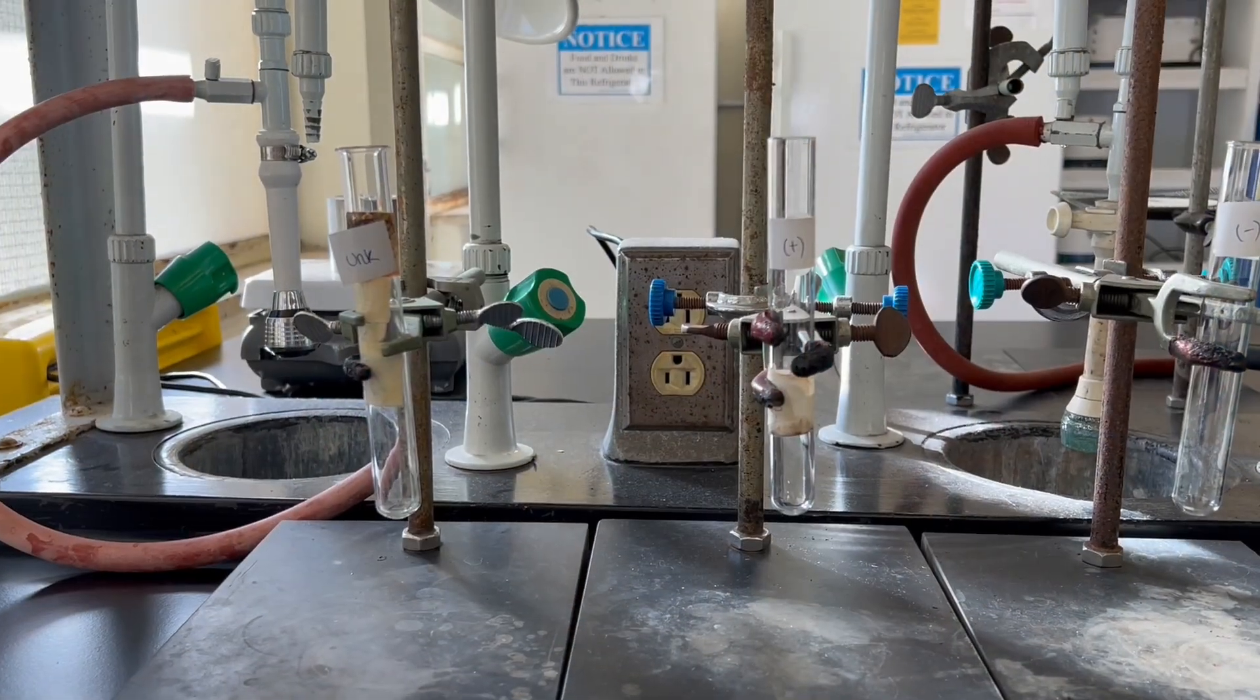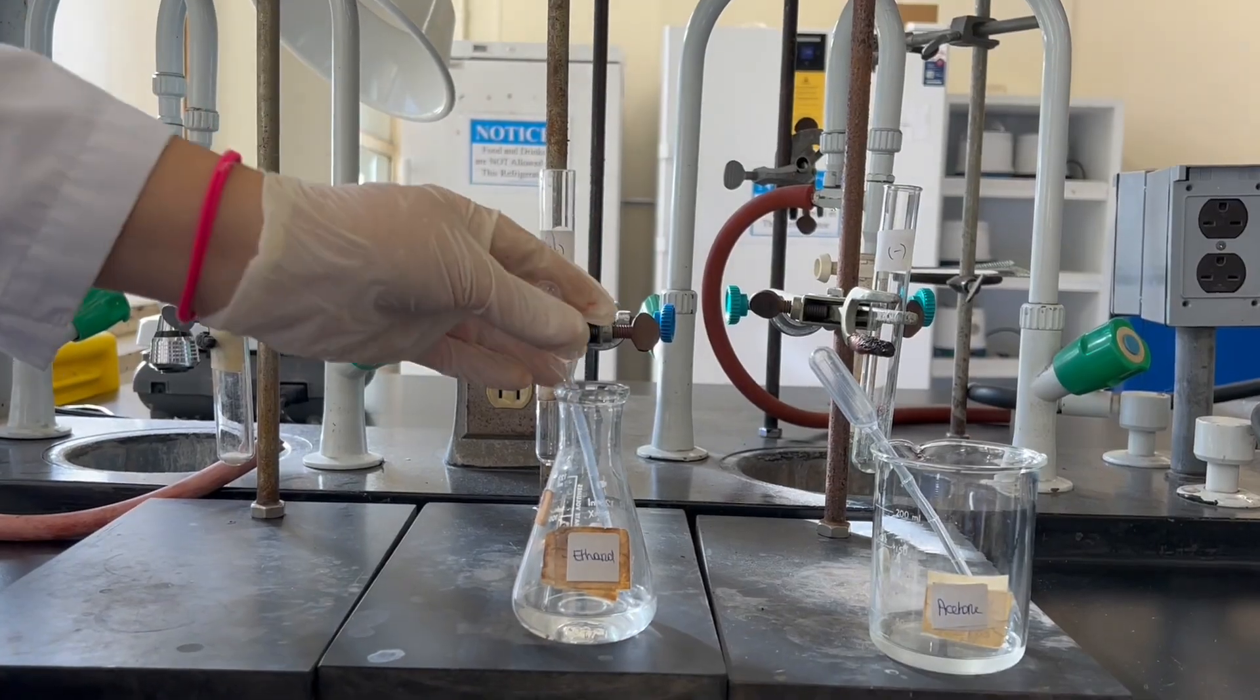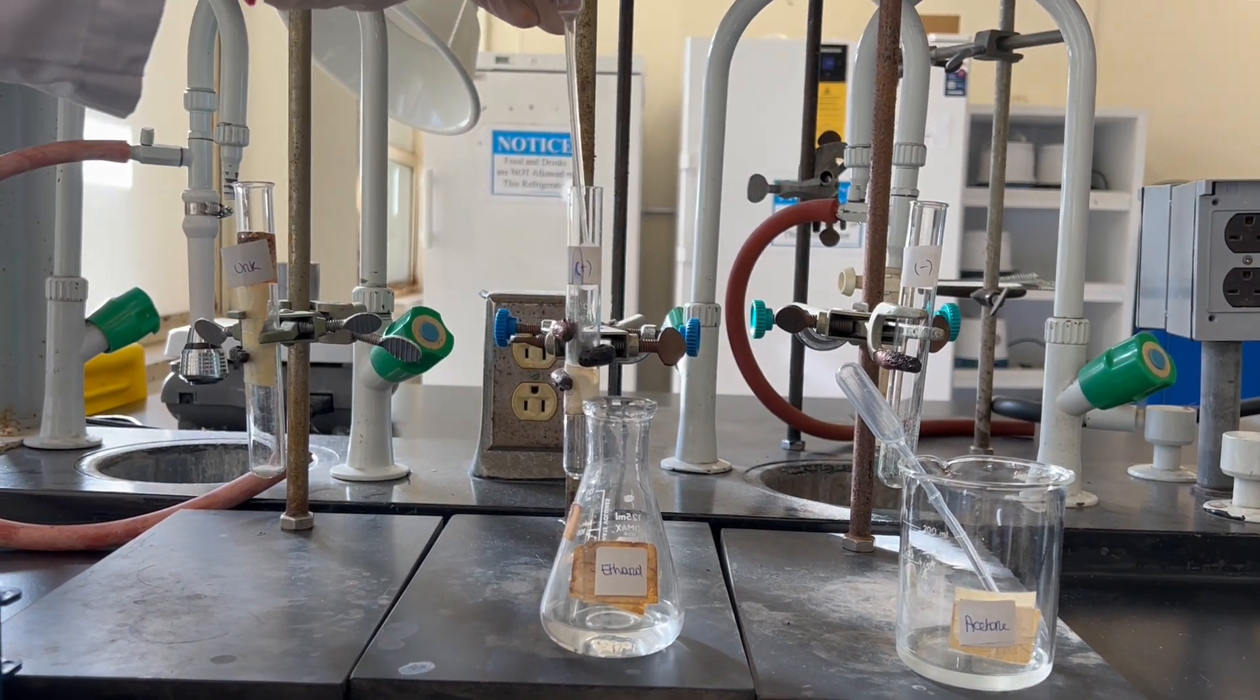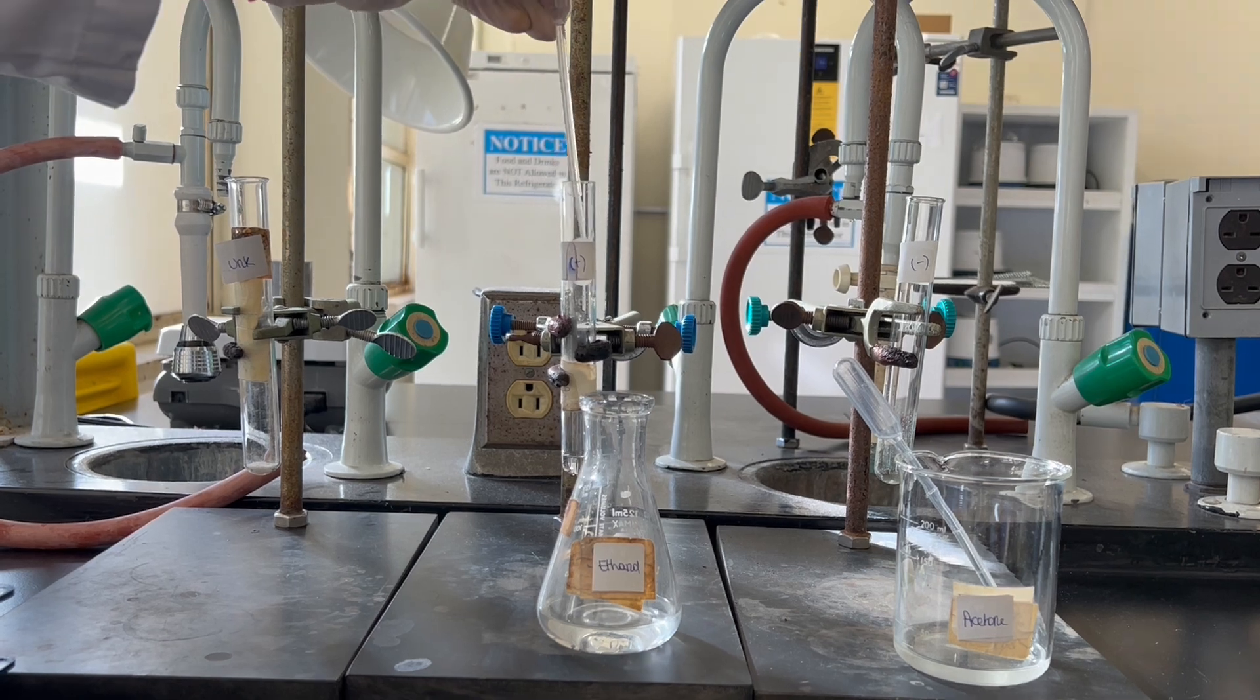In the first test tube, we will add a few milligrams of our solid unknown. We will use ethanol as a positive control since it is a primary alcohol, and pipette a few milliliters of ethanol into the positive control test tube.